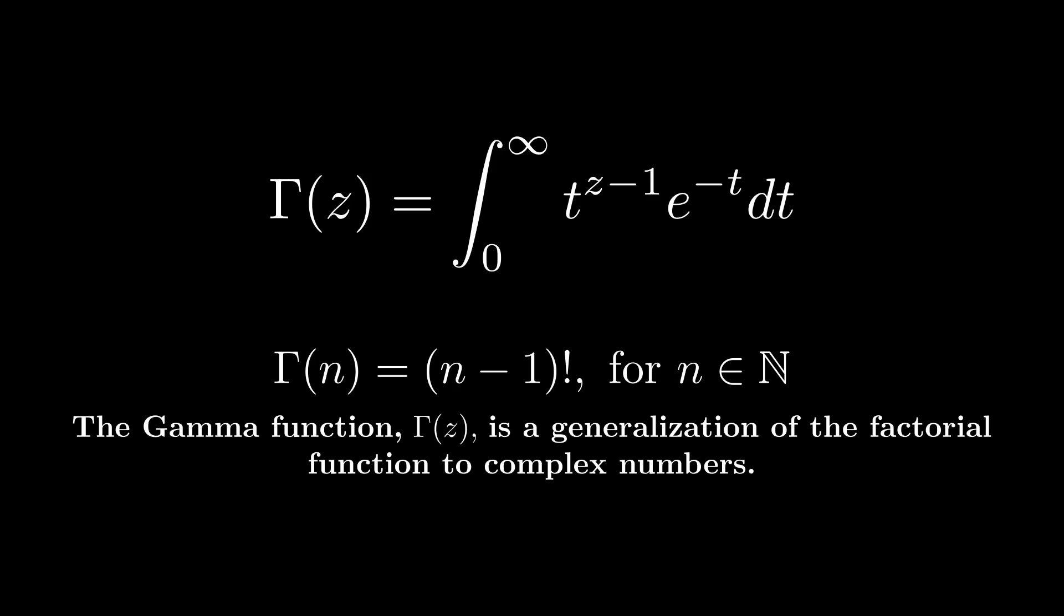Now, it might be slightly unfortunate that gamma of z is not z factorial, it's z minus 1 factorial. Gamma of z plus 1 is the same as z times gamma of z. This is due to the recursive nature of factorials. 5 factorial is the same as 5 times 4 factorial. And if we're extending this to the complex numbers, gamma of i plus 1 should be i times gamma of i.